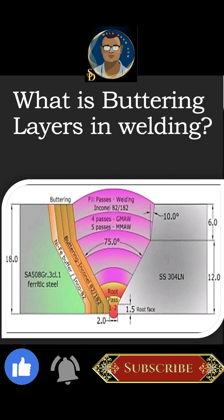A weld joint of carbon or low alloy steel to austenitic stainless steel can include a buttering layer of 309L filler alloy on the carbon steel surface.